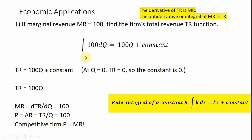Using our integral notation, the integral of 100 is just going to equal 100Q plus a constant. The rule for the integral of a constant is just going to be that constant times a variable. Our variable here is not X, it's Q. So we get back 100Q plus a constant.